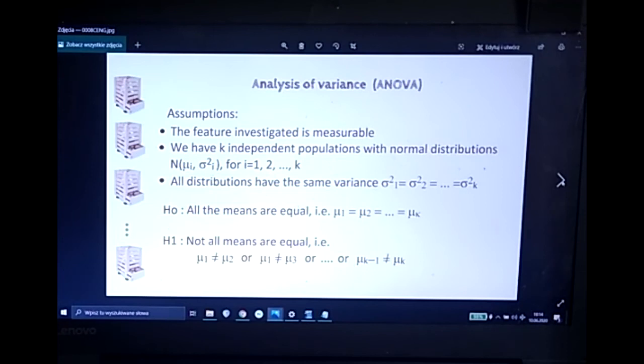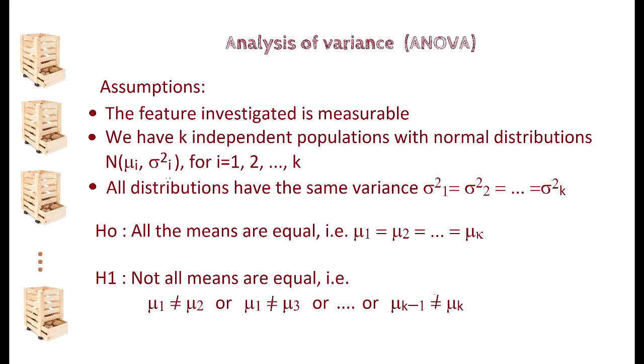What are the assumptions of analysis of variance? Let's state it clearly. The first is that feature investigated is measurable. Second is, we have K independent populations with normal distributions, with means μi and variances sigma squared for i equal 1 to K. So we have K groups of potatoes, for example. All distributions have the same variance. All of those, we can assume, have the same variance. Then the null hypothesis that all the means are equal, meaning μ1 equals μ2 equals μK, and H1 is not all means are equal, meaning μ1 not equal to μ2, or μ1 not equal to μ3, and so on. The negation of a conjunction means alternative of negations. That's why we have OR now between the conditions given in null hypothesis.